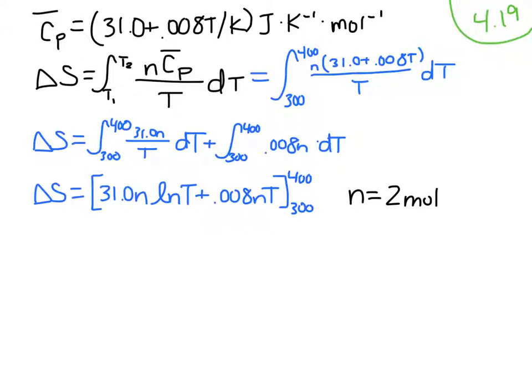We can split it into two parts and then take the antiderivative of each of those two parts and evaluate the entire thing from 300 to 400 kelvin with an n value of 2 moles.